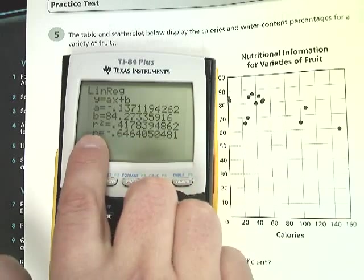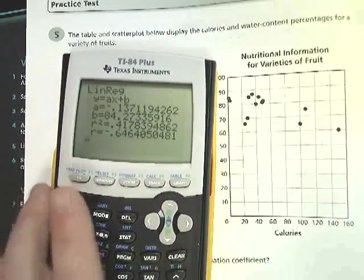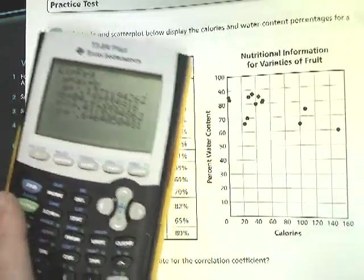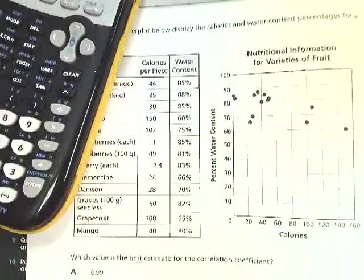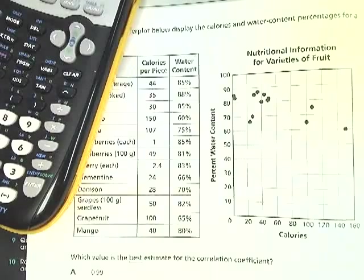This value here, R equals, that's the correlation coefficient that I'm looking for. And it's negative 0.646, so negative 0.65. And B is negative 0.65. So that's the answer to number 5.